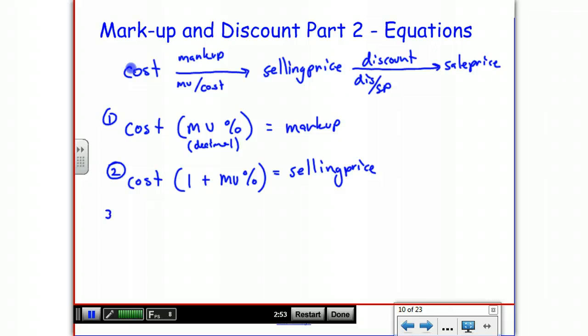And then with discount, the third equation, we'll have one that corresponds very closely to this, except we're talking about discount. So we say the selling price times the discount percent or the percent discount, again as a decimal, is always equal to the actual discount.